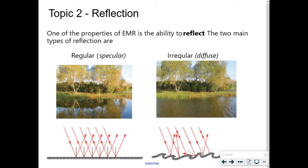Let's do our second topic on properties of light. We're going to go through what scientists knew, as well as what we still know. We have to build our way through the 1800s and talk about how all of these discoveries ultimately led to the quantum revolution in the year 1900, give or take. So what I want to talk about today is the property of reflection.